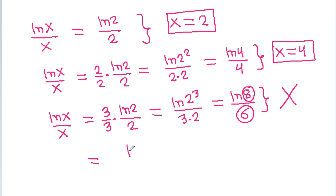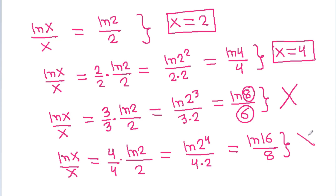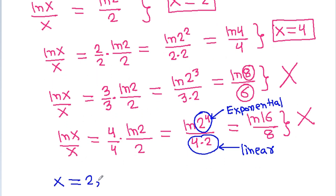And we have ln 2 by 2, and if we multiply it with 4 by 4, then it will be equal to ln 2 power 4 by 4 times 2, that is ln 16 by 8. It is ln x by x. So from here we cannot get any solution, and we can see that in the numerator 2 power 4 is exponential and 4 times 2 is linear, so they cannot be equal to ln x. So we get x is equal to 2 and 4.